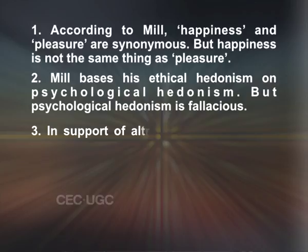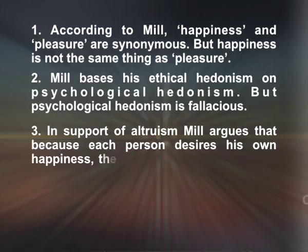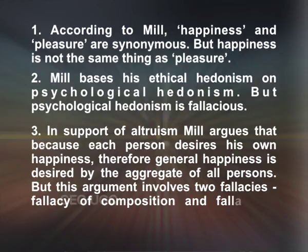Number 3 — In support of altruism, Mill argues that because each person desires his own happiness, therefore general happiness is desired by the aggregate of all persons. But this argument involves two fallacies: the fallacy of composition and the fallacy of division. Each person's happiness is a good to him; therefore, general happiness is a good to the aggregate of all persons — here we argue from the distributive to the collective use of the term, hence the fallacy of composition. Secondly, the general happiness is a good to the aggregate of all persons; therefore, the general happiness is good to each person — here we pass from the collective to the distributive use of the term, hence the fallacy of division.